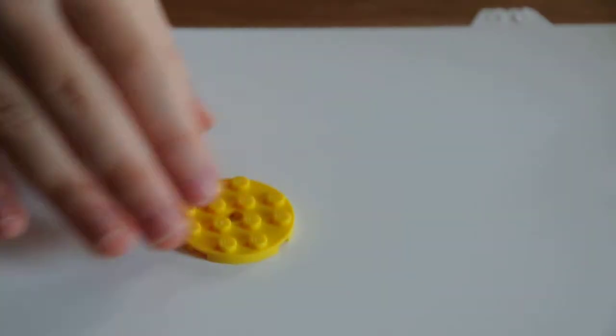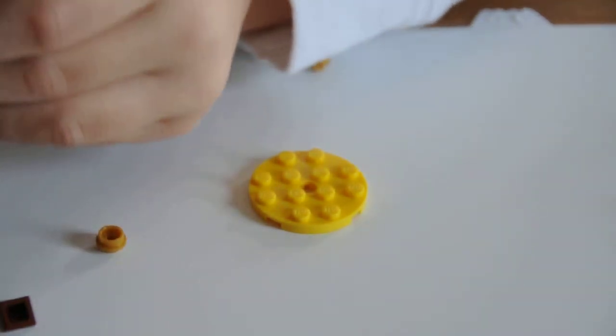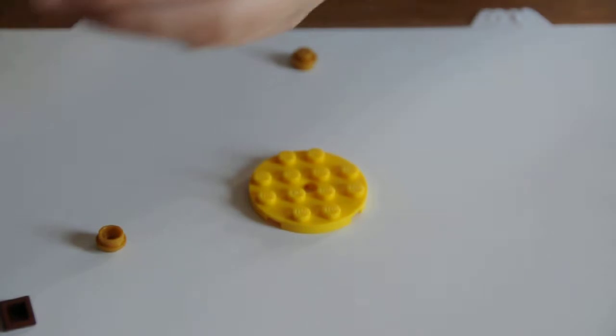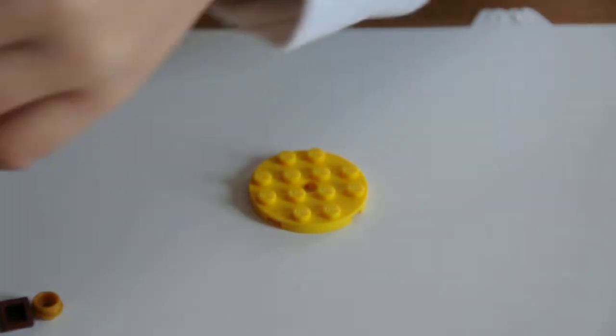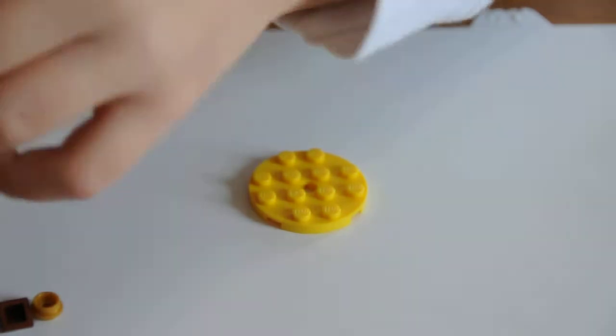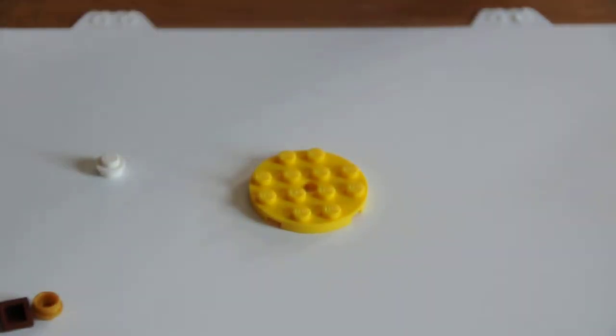So next, it talks about how to build this target for the bow and arrow, which I might need some of these small pieces for. Okay, if I need more, I'll just... This will only take a sec. Alright, so now I've got all my pieces.